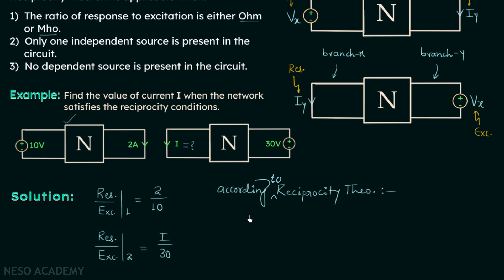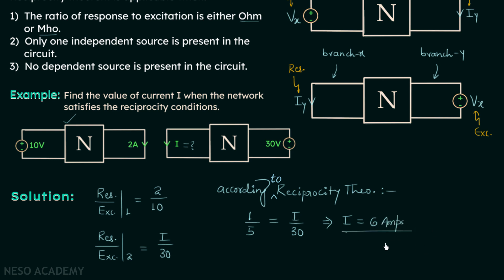Therefore, 2 over 10 — which is 1 over 5 — will be equal to I over 30. From here we will have current I equal to 6 amperes. This is our answer.